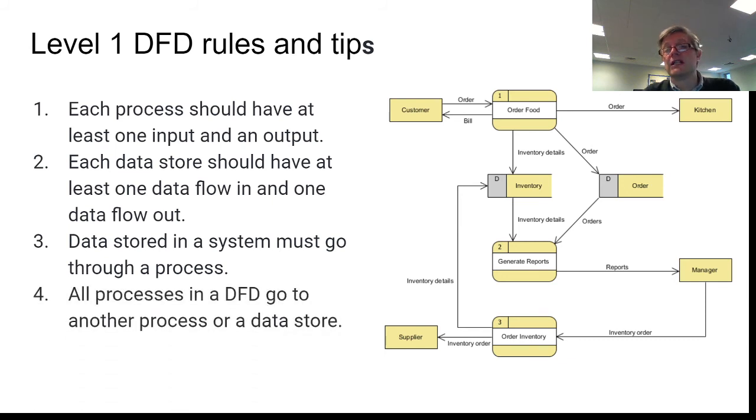All processes in a data flow diagram will go to either another process, so a second process may happen, or it will be stored somewhere in the system. So these are the four basic rules for data flow diagrams. They're not that complicated to understand.